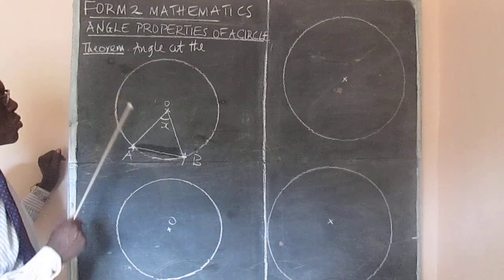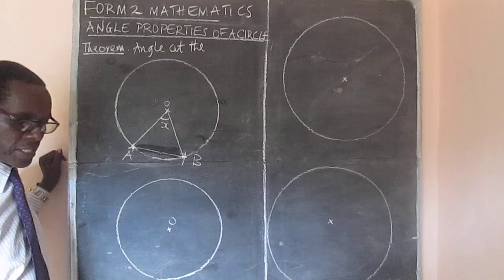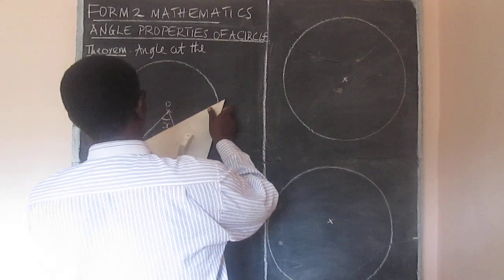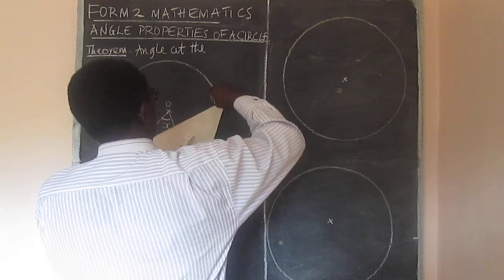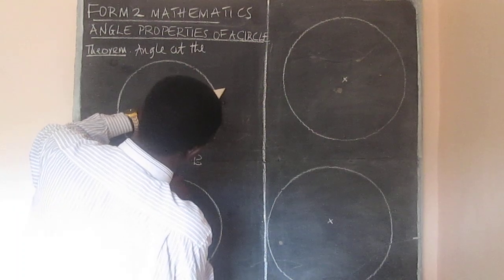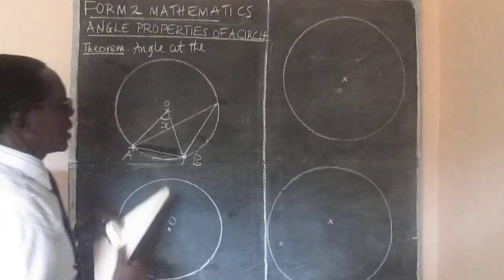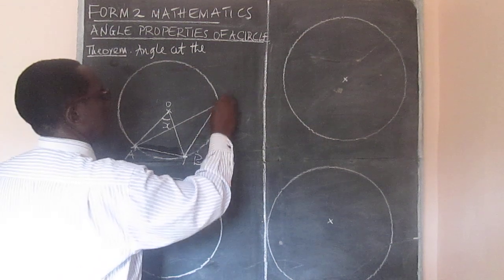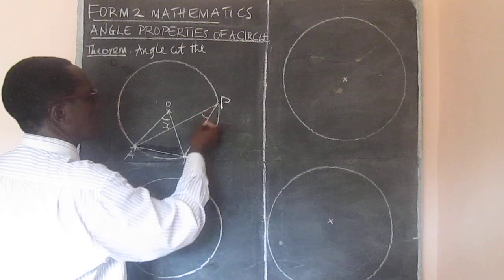Let the chord subtend two angles, or even three, on the circumference, just like this. So we have made the chord AB subtend the angle APB on the circumference. You can call that angle Y.